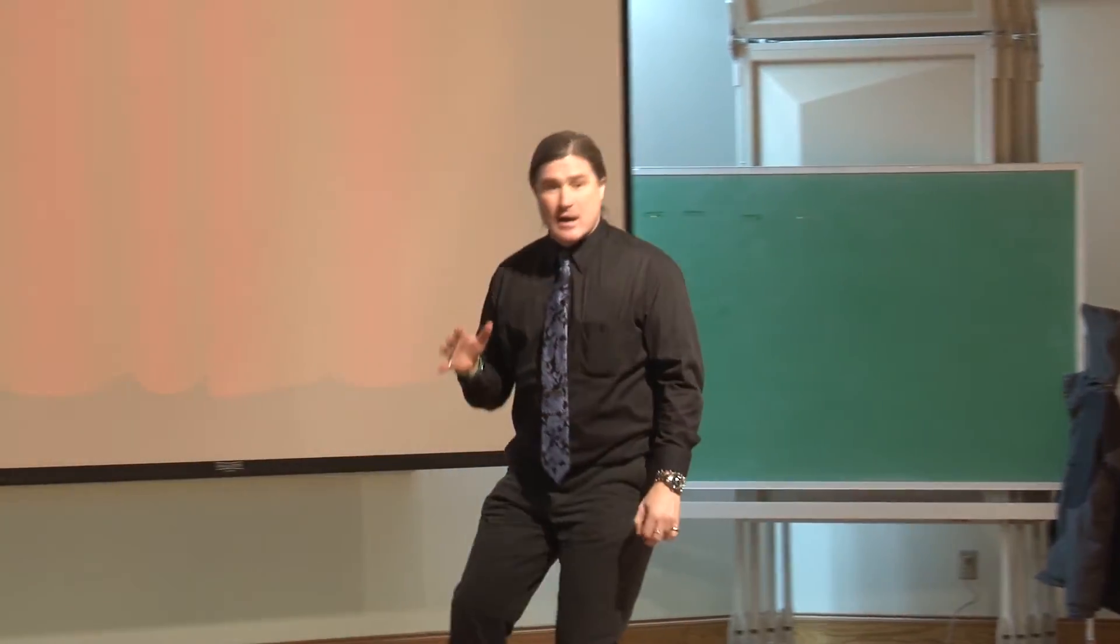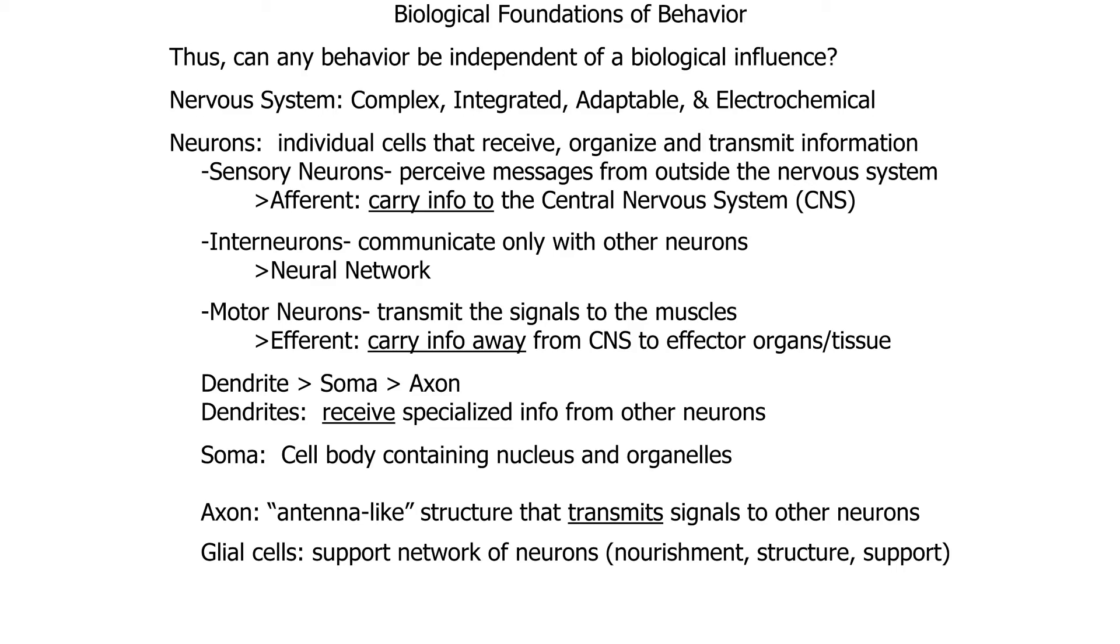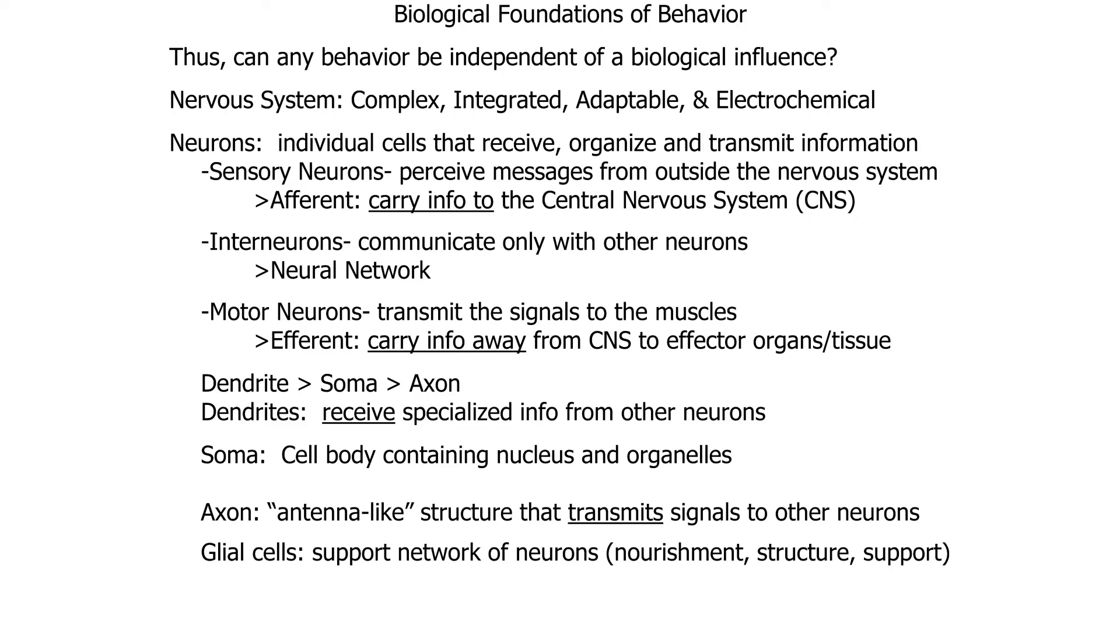So let's start at the basics. A neuron is a cell. It's a cell that functions. It's an active cell. The neuron receives, organizes, and transmits information. So it's a complicated cell. It's a busy cell. It's an absolutely necessary cell to have any kind of functioning whatsoever.